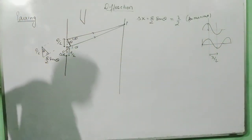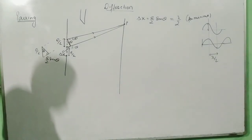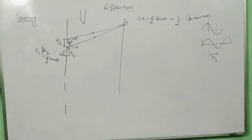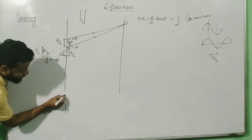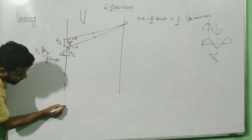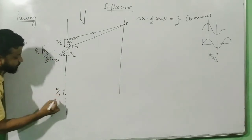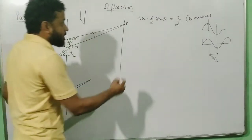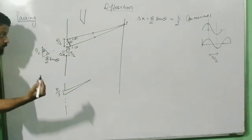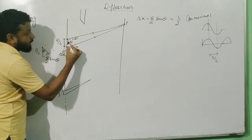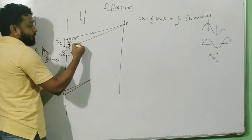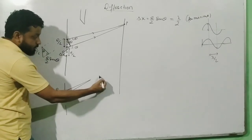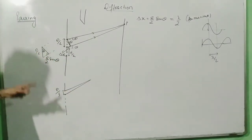Secondly, if you imagine the slit divided into four equal segments — each of width e/4 — and you take one wavelet from the first segment and one from the third segment, the path difference will be (e/4) sinθ. If the disturbance from one point and the disturbance from the paired point travel to point P and satisfy λ/2, it will be a dark region — a minima.